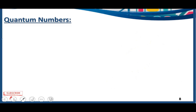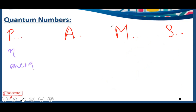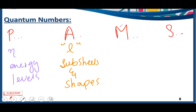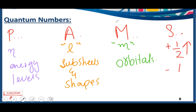To conclude, there are four different quantum numbers. The principal quantum number, represented by n, gives information about energy levels. The azimuthal quantum number, also called the angular quantum number, is represented by l and gives information about subshells and their shape. The magnetic quantum number, represented by m, gives information about orbitals and describes the orbitals within the subshells. The spin quantum number tells us about the spin of the electrons: +1/2 in the clockwise direction and −1/2 in the anticlockwise direction, due to the self-rotation of the electrons.